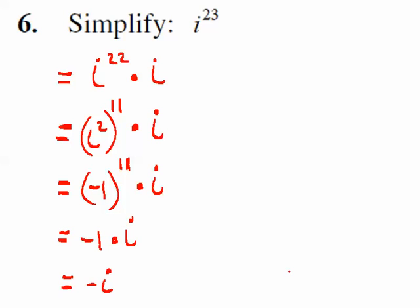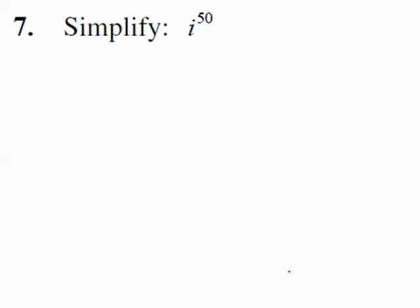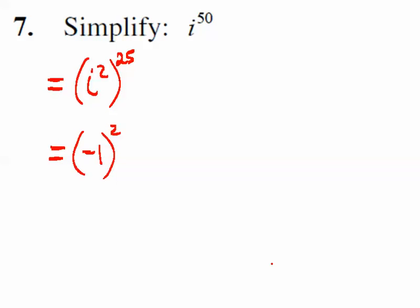Let's try i to the 50th. That's really i squared to the 25th, which is negative 1 to the 25th. Since 25 is odd, the answer is negative 1. That's a much easier system for handling powers of i.